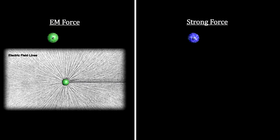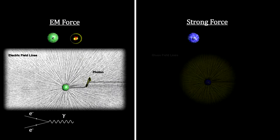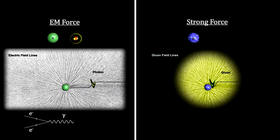We have seen that an accelerating electron creates a vibrating ripple in its electromagnetic field, called a photon. Similarly, an accelerating quark creates a vibrating ripple in its gluon field, called a gluon.